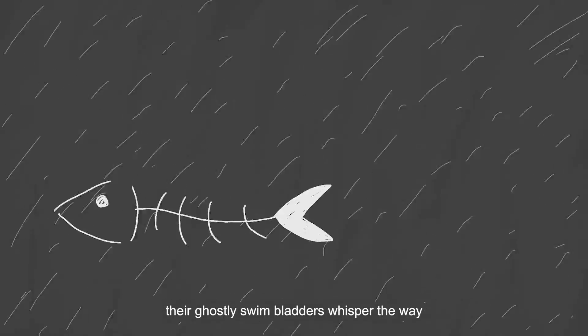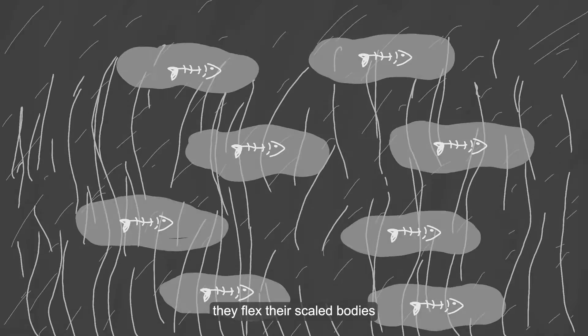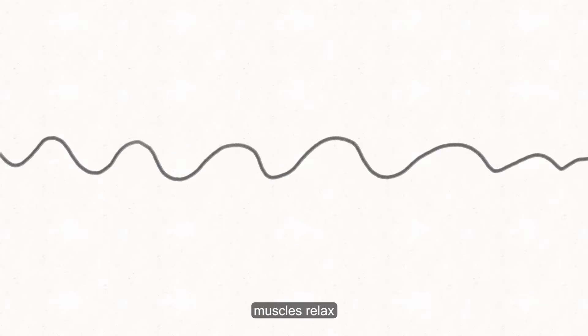Ghostly swim bladders whisper the way to traditional breeding grounds. They flex their scaled bodies. Tails swing gossamer thin, to and fro. Back fins push, muscles expand, muscles relax.